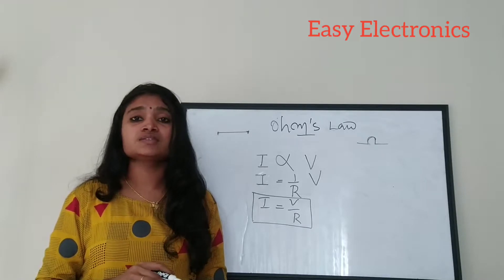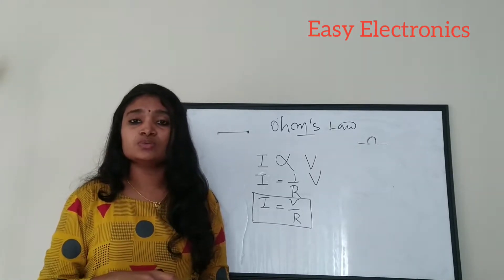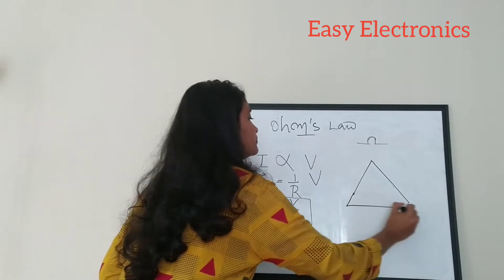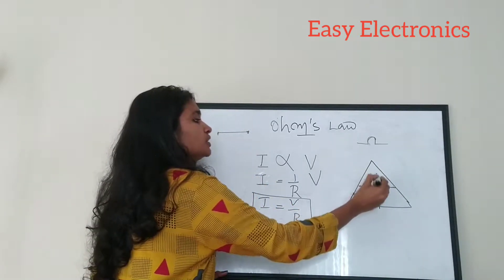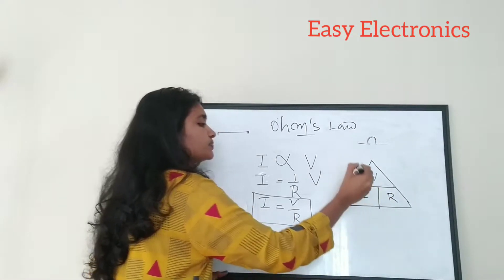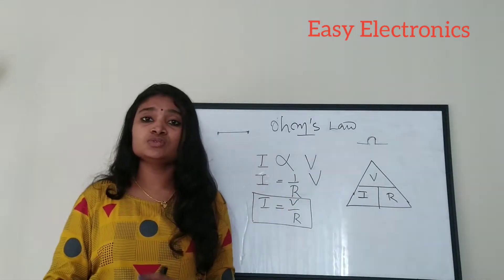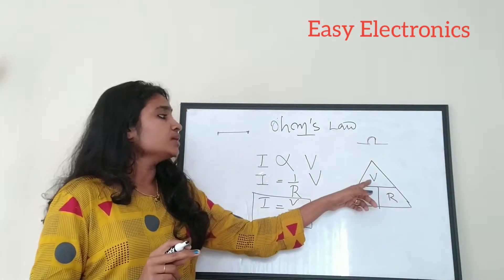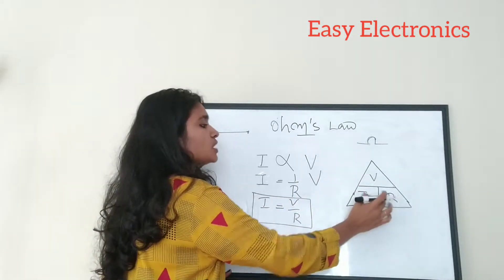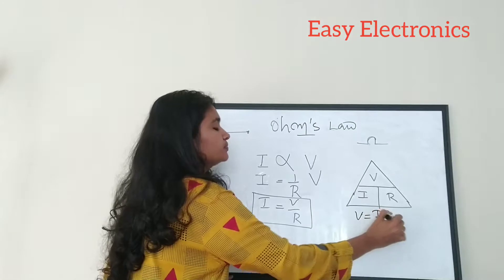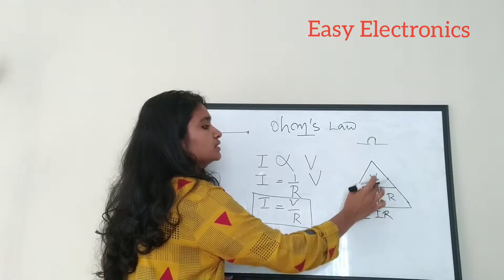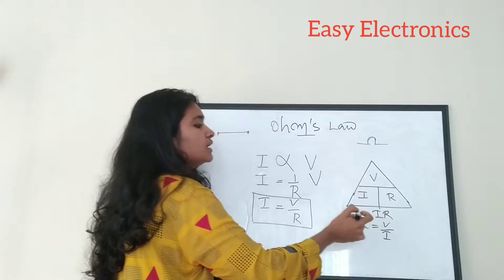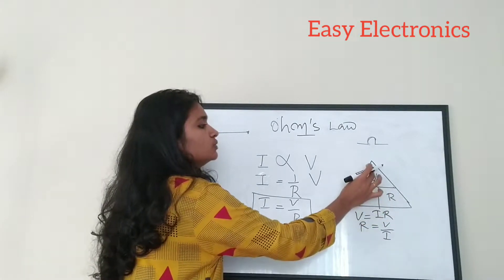There is a triangle used for representing Ohm's Law easily — the Ohm's Triangle. It has V at the top, R and I at the bottom. From this triangle, the three equations are: V = I × R; R = V / I; and I = V / R. If you have trouble remembering the Ohm's Law equations, you don't need to memorize them by heart — just use the Ohm's Triangle.